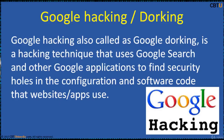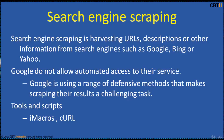Google Hacking locates specific strings of text within search results. Some popular examples include finding specific versions of vulnerable web applications. Another great utility is search engine scraping — harvesting URLs, descriptions, or other information from search engines like Google, Bing, or Yahoo. Google does not allow automated access to their service and uses a range of defensive methods that make scraping their results a challenging task.